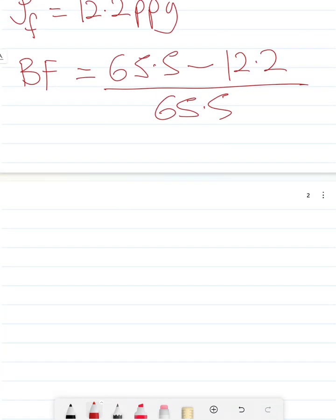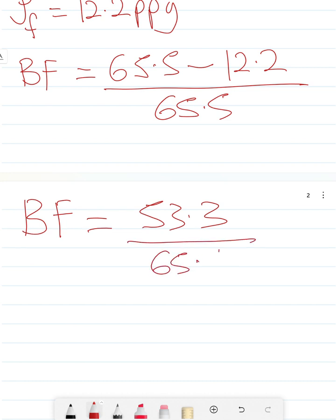If you do the math quickly, buoyancy factor is going to be 65.5 minus 12.2, that should give us 53.3, divided by 65.5. When you divide that quickly, your buoyancy factor will be equal to 0.8137.